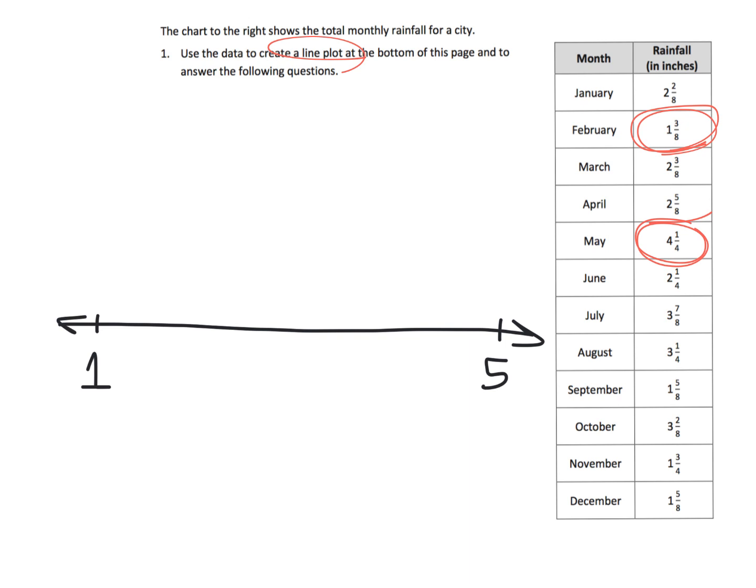So that's one, two, three, four. So two, three, four, five. So this is going to be the basis of our line plot because our least number is one and three-eighths, somewhere around here, and our greatest number is four and a quarter, so it's going to be somewhere up here.